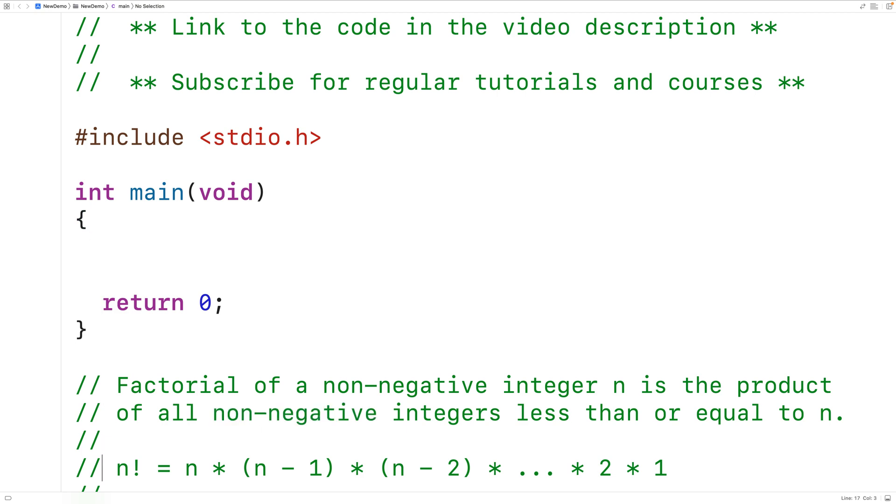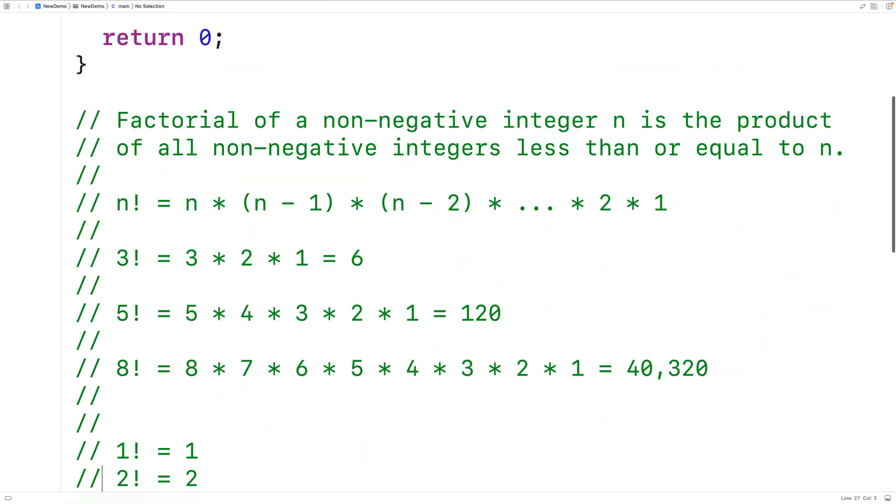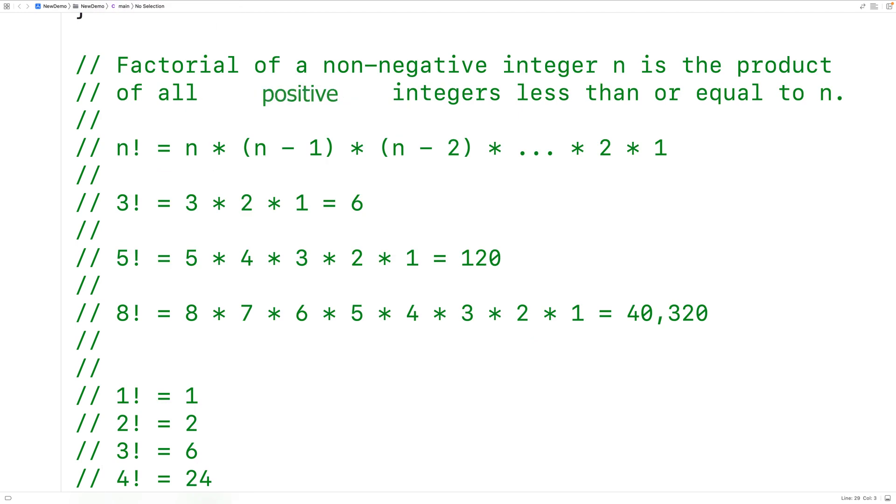The factorial of a non-negative integer n is the product of all positive integers less than or equal to n. For example, the factorial of 3 would be 3 times 2 times 1, which would give us 6. The factorial of 5 would be 5 times 4 times 3 times 2 times 1, which would give us 120.